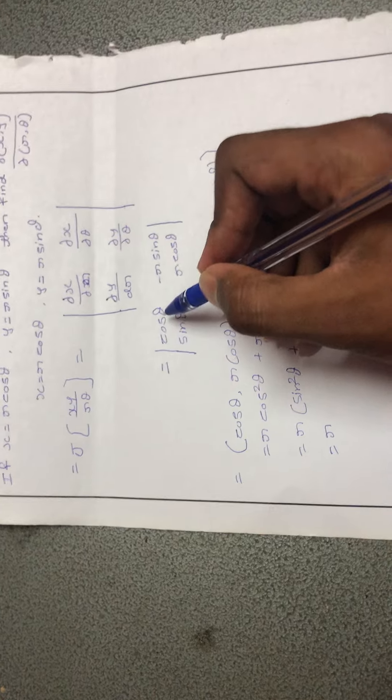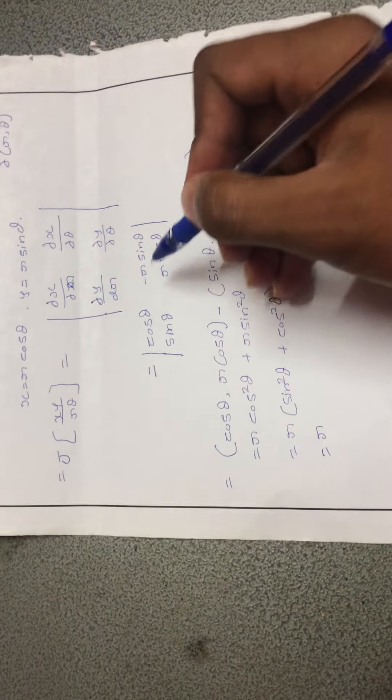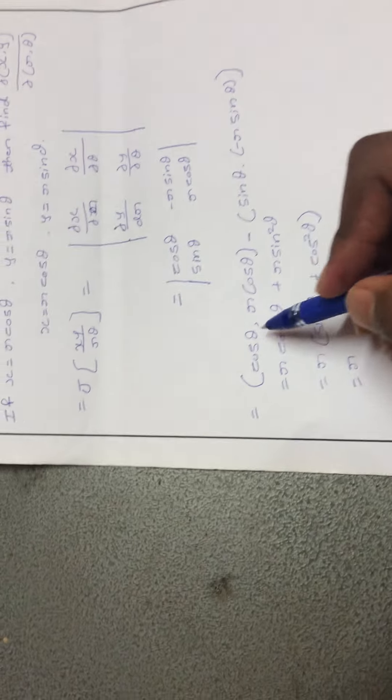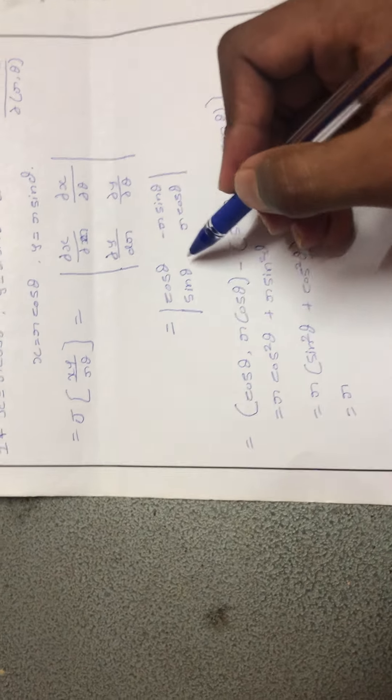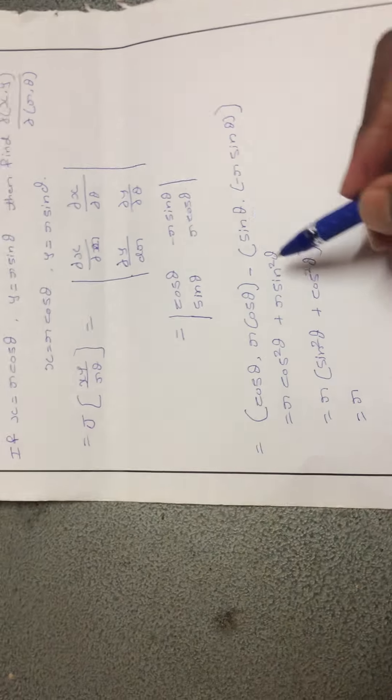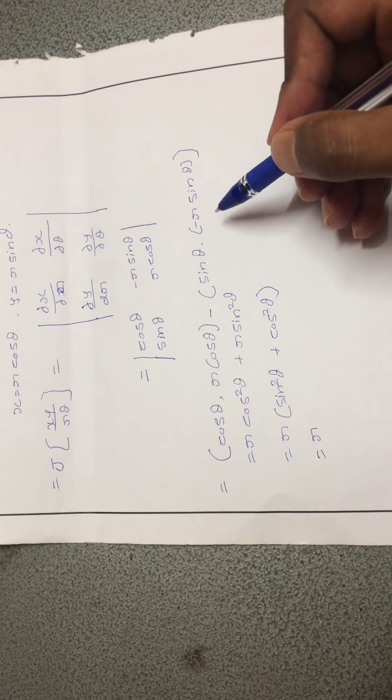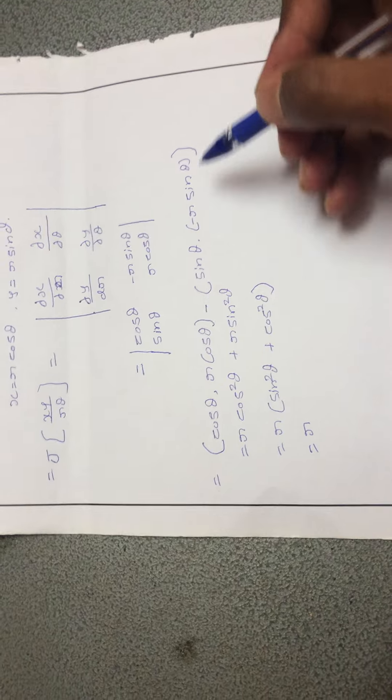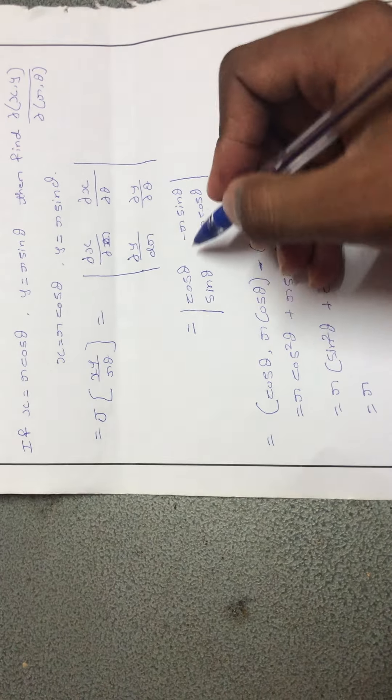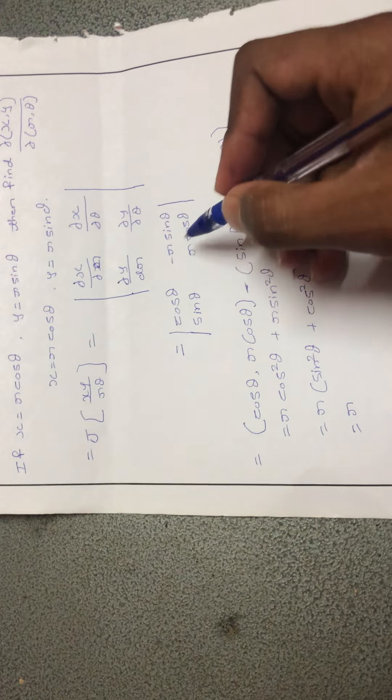Then we multiply cos theta and r cos theta here, and we multiply sin theta minus r sin theta. We get sin theta into minus r sin theta. We put minus, it's a matrix in multiplication.